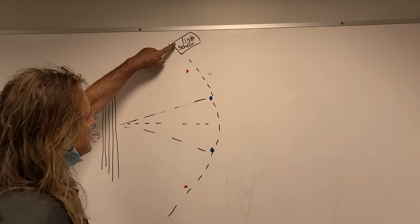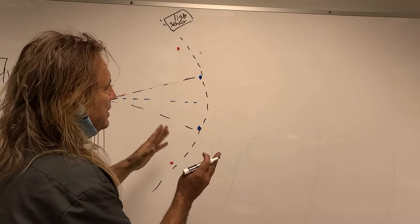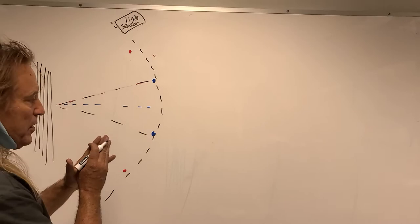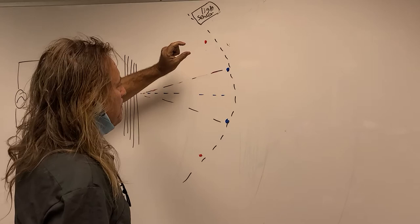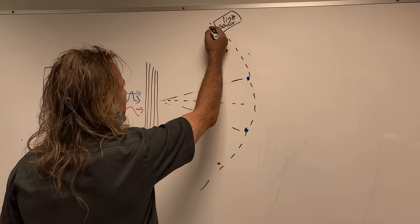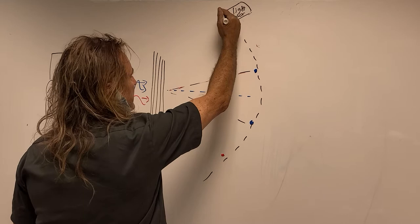This sensor will have a narrower bandwidth where it sees light. In front of it is also an aperture slit. There's an aperture slit in front of the sensor.